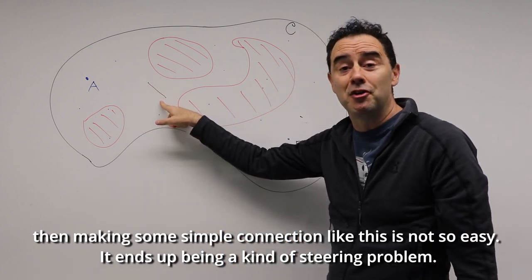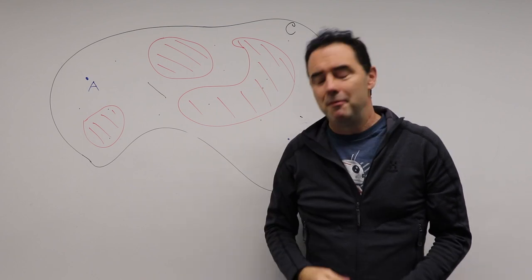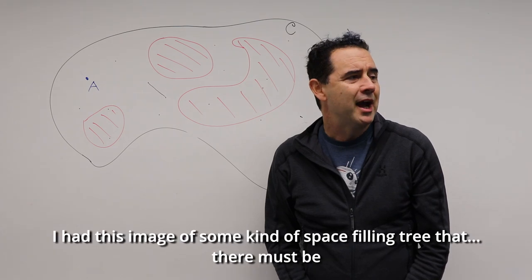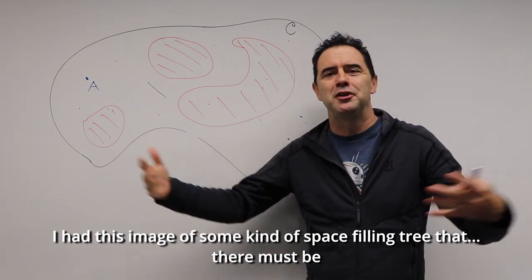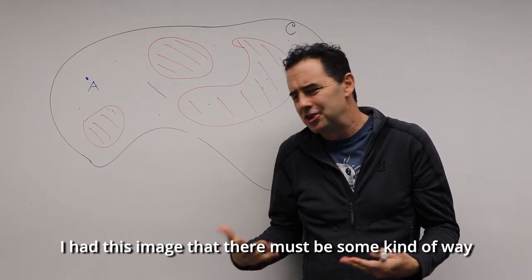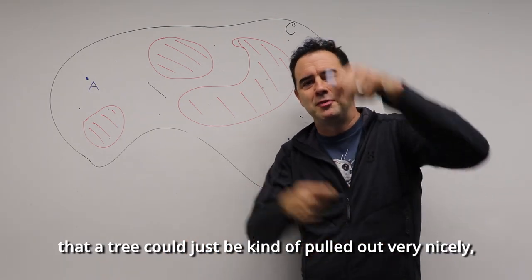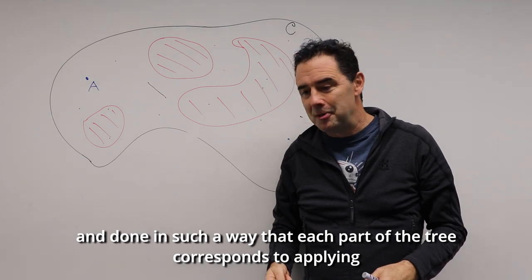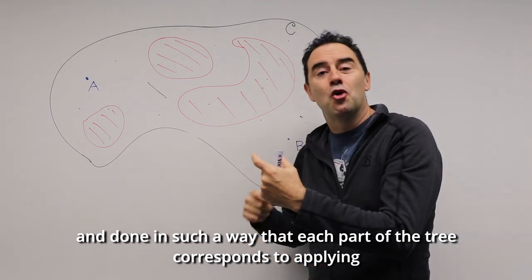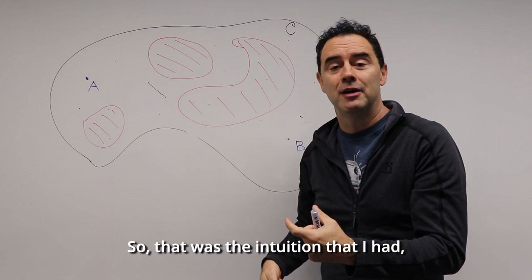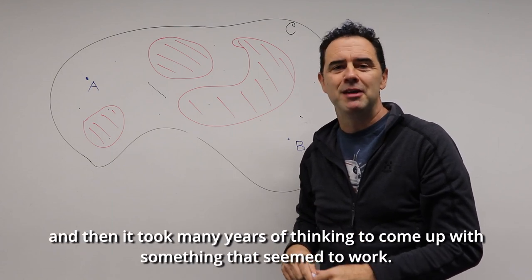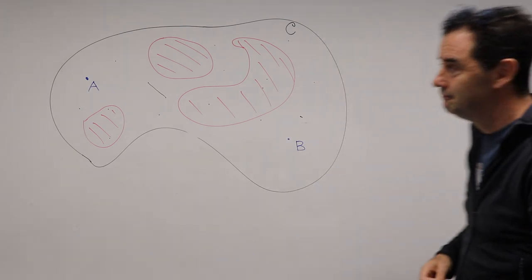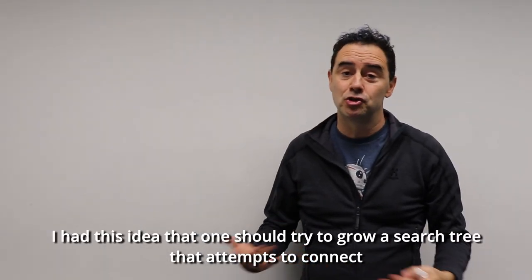Because of that, going back to around 1993–1994, I had this image of some kind of space-filling tree — that there must be some way a tree could be pulled out very nicely, where each part of the tree corresponds to applying some input to a control system. That was the intuition I had. It took many more years of thinking to come up with something that seemed to work. The idea was to grow a search tree that attempts to connect the initial configuration to the goal configuration.